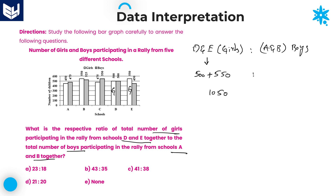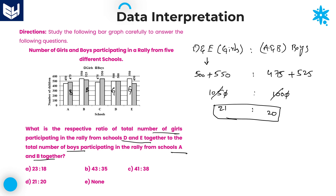Boys are the dark color. School A boys = 475, school B boys = 525. Adding: 475 + 525 = 1000. The ratio of 1050 to 1000 simplifies — canceling zeros and dividing by 5 — gives 21:20. Therefore the required ratio of D and E girls to A and B boys is 21:20. Option D is the right answer.